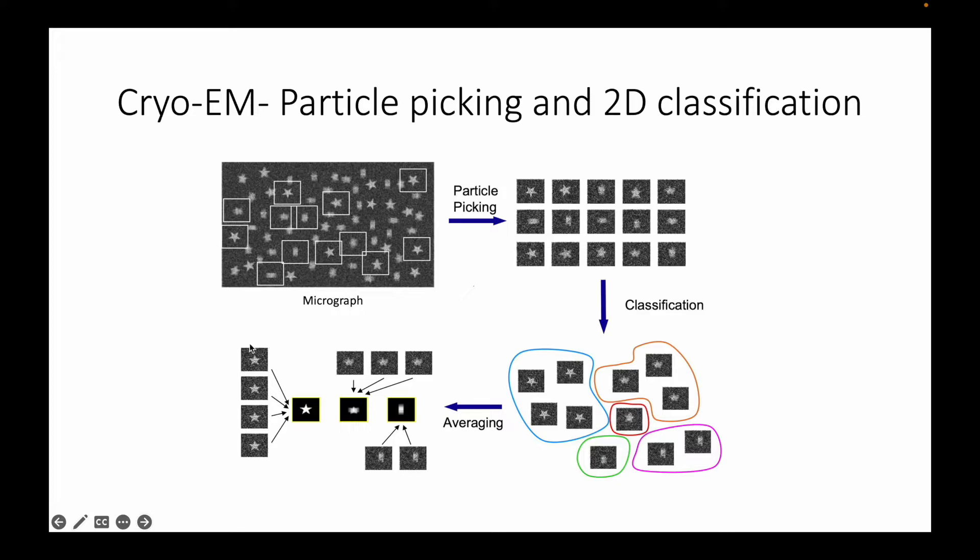Once we have all of these images which are captured as movies and aligned then we can move on to the next step which is particle picking and 2D classification. In cryo-EM we have these micrographs and we have particles in different orientations. For example we have a star shaped particle, this is a front view of the particle and there's a side view of the particle and different views of the same particle. What we do next after capturing the images is particle picking wherein you pick out these individual particles, we box them out.